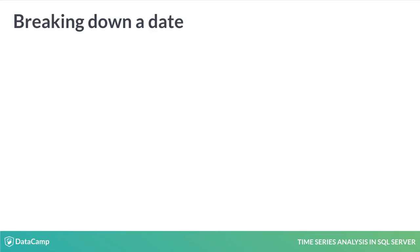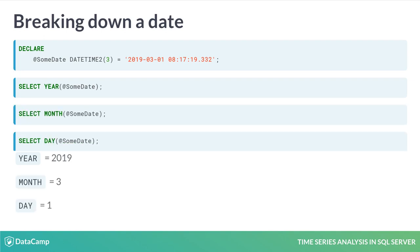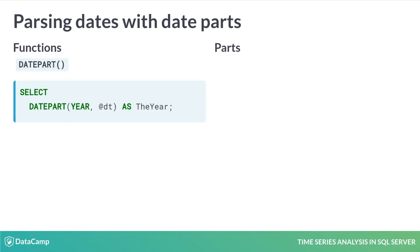Suppose we don't need an entire date and time, but only want a specific part. For a date like this one, there are a few built-in functions — we can get the year, or the month, or the day. This might not be enough to satisfy us, so we need to take it to the next level. The DatePart and DateName functions give us much more control over our date parts. DatePart returns the numeric value of the part we want, such as the year.